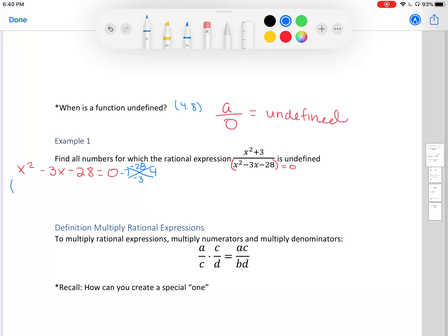x squared minus 3x minus 28. So we have an x squared. This factors to be x minus 7 and x plus 4. Let's set each one of the factors equal to 0, x minus 7 is equal to 0, and x plus 4 is equal to 0.